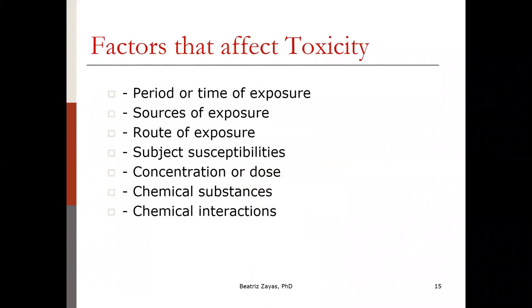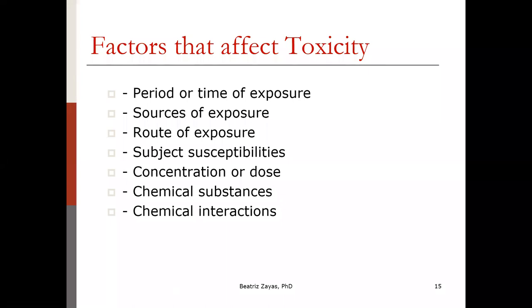One question I hear continuously is: why would the same substance affect certain people but not everybody? A typical example would be cigarette smoke. There are multiple factors — it's not only about the substance. There are other factors that affect toxicity: the period or time of exposure, the source and how we are exposed, the route by which it gets into the body, subject susceptibilities, variability among subjects, and certain conditions or diseases that might make a person more susceptible. Age is also a factor. The concentration or dose is definitely a key aspect, and we'll talk more about dose as the presentation continues.